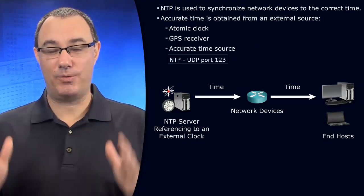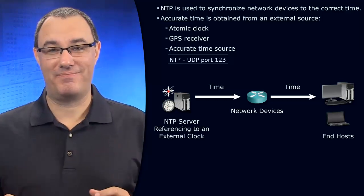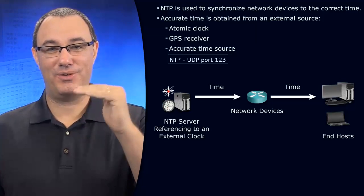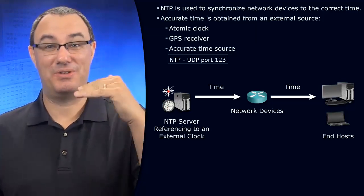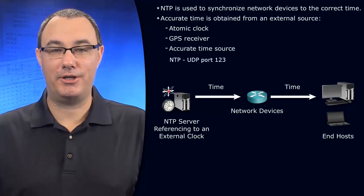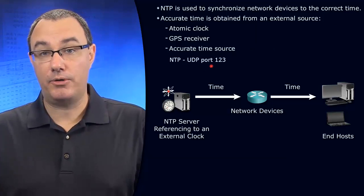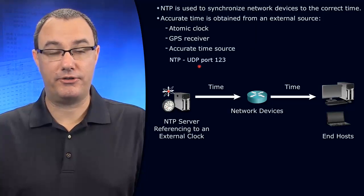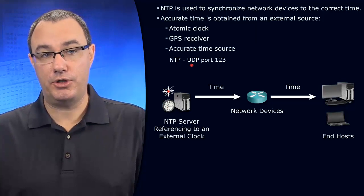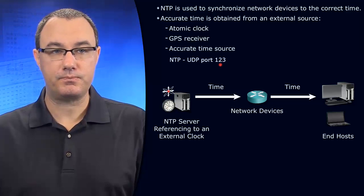I have a way to remember port 123: you look at a clock and think about the first three numbers on it — 1, 2, 3, that progression. It's also good to know how to allow this protocol through an access control list; you'd reference it with a permit statement for UDP equal to port 123.